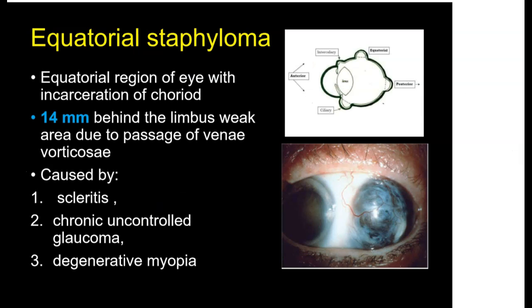In equatorial Staphyloma, there is protrusion of the equatorial choroid. This occurs around 14 mm behind the limbus. This is a weak area in the sclera due to the passage of vascular channels — vortex veins. The common causes of equatorial Staphyloma are scleritis, advanced glaucoma, and degenerative myopia. Note that degenerative myopia most commonly causes posterior Staphyloma, but it can also cause equatorial Staphyloma due to overall thinning and weakness of the sclera from elongation of the eyeball.